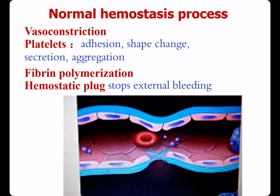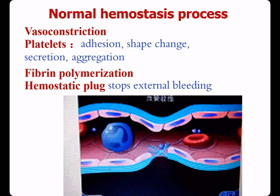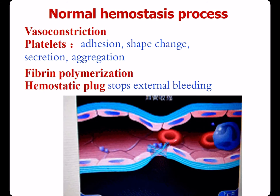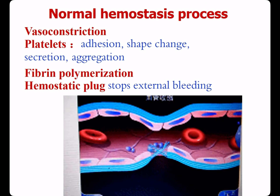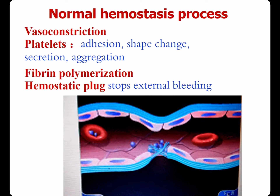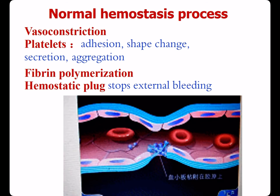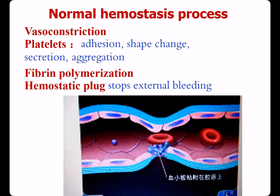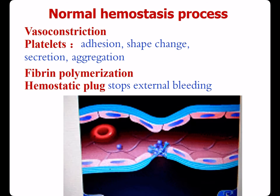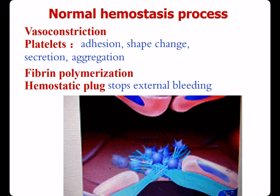In this video, vascular injury leads to muscle constriction. Platelets adhere and undergo shape change, then secrete and aggregate. Then the primary hemostatic plaque is formed.